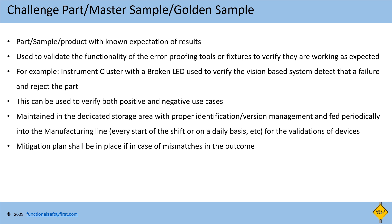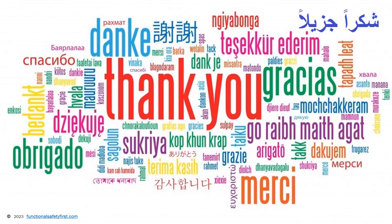A mitigation plan shall be in place in case of a mismatch in the outcome — meaning if a negative sample is inserted and the machine is expected to detect it, but the machine is not detecting it, then a mitigation plan to check the machine shall be in place. In our upcoming video, we will learn about these activities from a functional safety perspective. Stay tuned. Contact us at autofunctionalsafety@gmail.com if you have any questions on this topic. Thank you for watching.